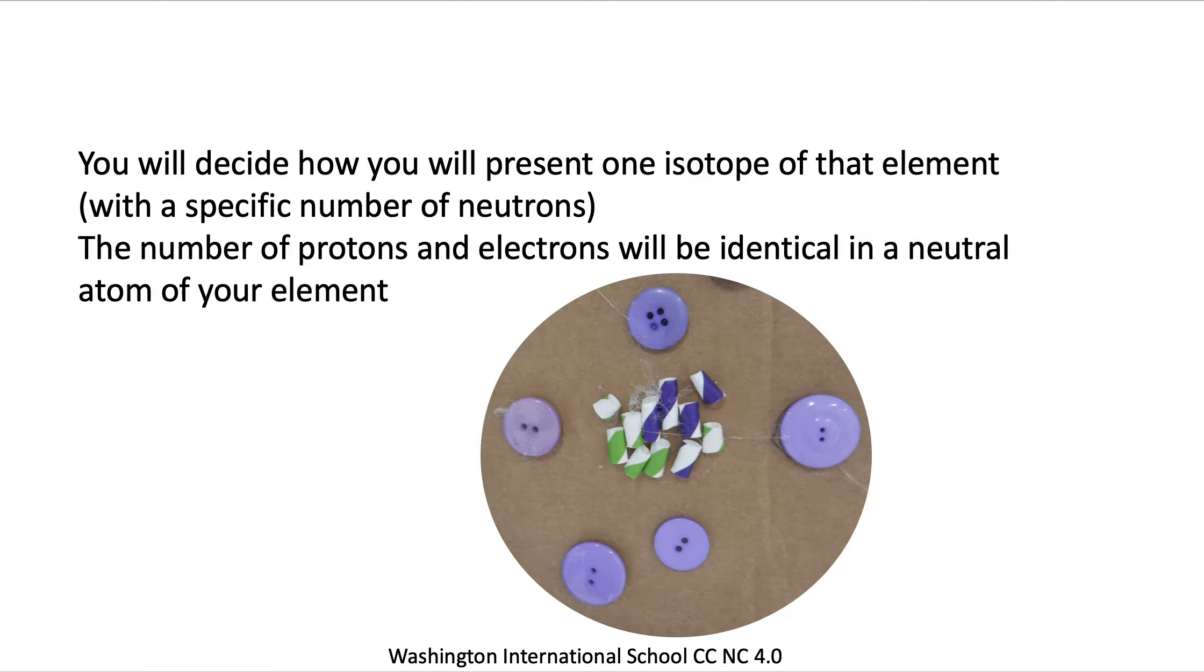You're going to decide how you will present the atomic structure of one isotope of that element, which will have a specific number of neutrons. The number of protons and electrons will be identical in a neutral atom of your element.